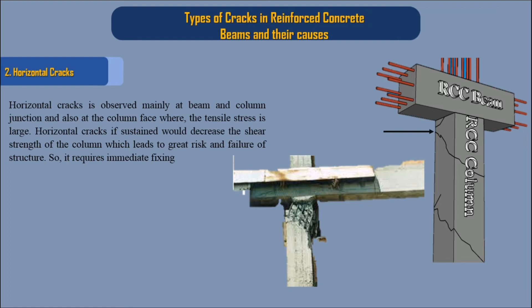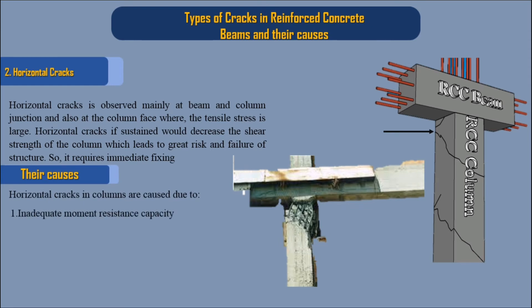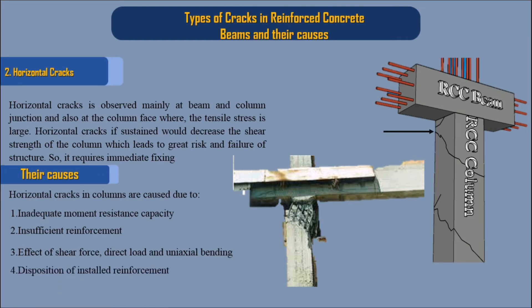Their causes: horizontal cracks in columns are caused due to 1. Inadequate moment resistance capacity, 2. Insufficient reinforcement, 3. Effect of shear force, direct load, and uniaxial bending, 4. Disposition of installed reinforcement.